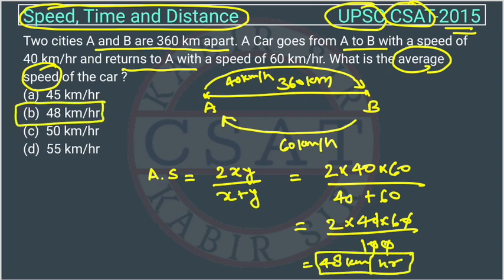So the average speed is 48 km per hour and the answer is Option B. This is the formula I am using here to calculate average speed.